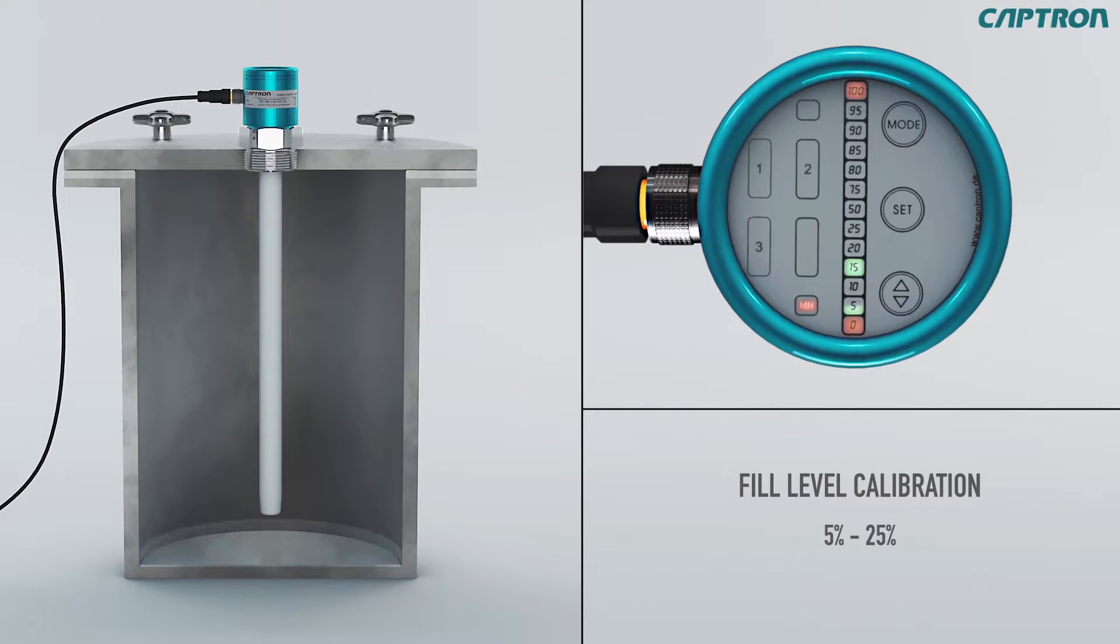Fill the tank with 5 to 25% of the desired measurement range. Now with up down you can set the value which corresponds to the actual fill level. Then confirm the value with set.